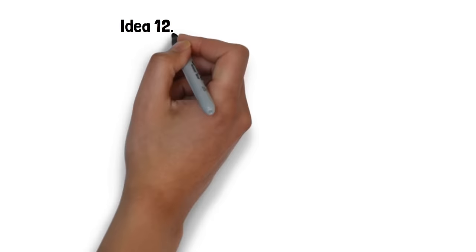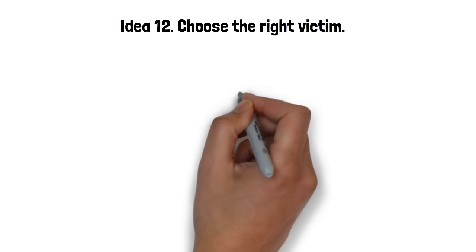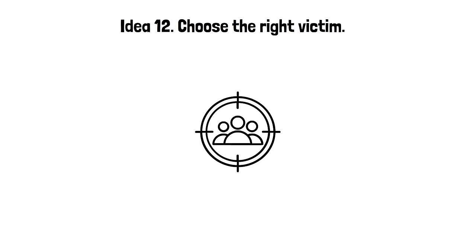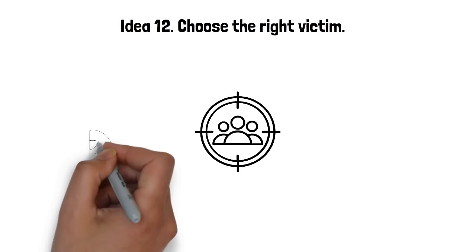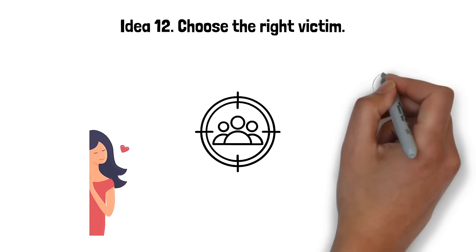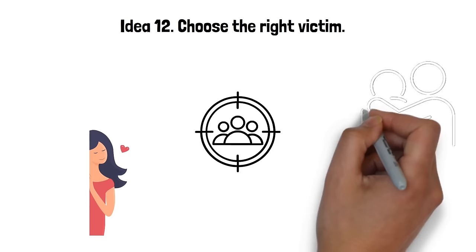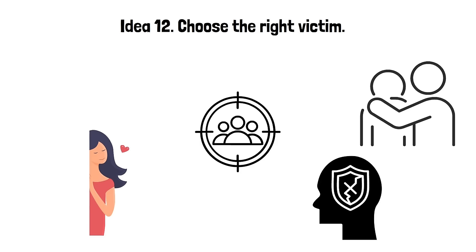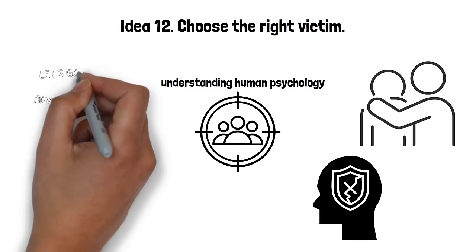Idea 12. Choose the right victim. Choosing the right person to seduce, often referred to as the victim, is a critical first step in the art of seduction. This doesn't mean the person is helpless, rather, it's about identifying someone who is receptive to your charm and seductive tactics. This individual may have certain vulnerabilities, unmet needs or desires that make them more likely to respond to your advances. It's about understanding human psychology and recognizing who might be open to the allure of seduction. The right victim could be someone looking for adventure, craving attention or needing affirmation. Identifying the right person involves keen observation, empathy and understanding of human nature.